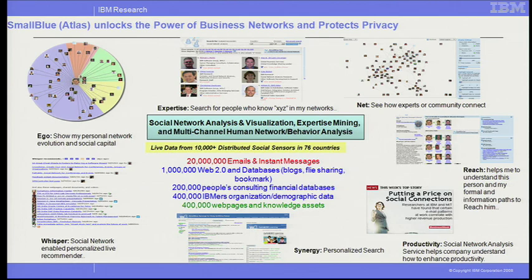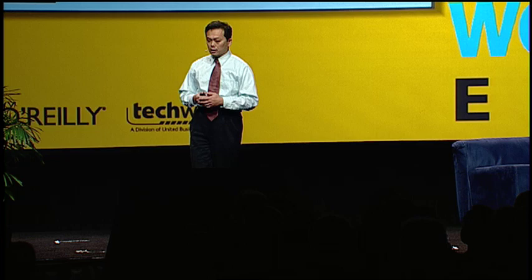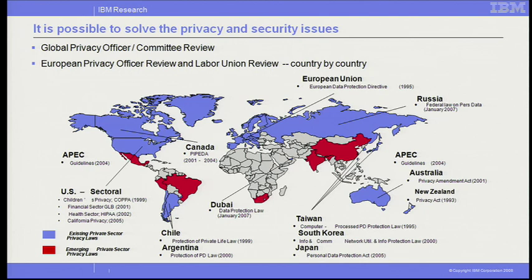How can we unlock that? At IBM we have been working on a project and prototype for three years to unlock the power of business networks while protecting privacy. We collect live data from more than 10,000 distributed social sensors in 76 countries. We collected about 20 million emails and instant messages from volunteers, and also 1 million Web 2.0 data points, trying to use social network analysis and visualization to find out expertise and what the real social network looks like between people.